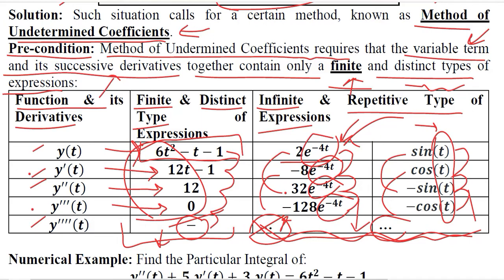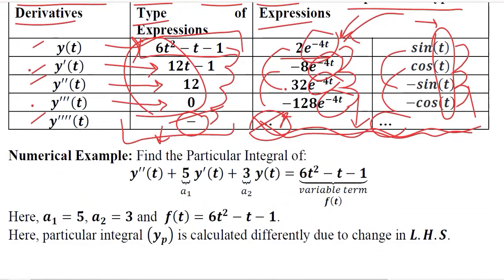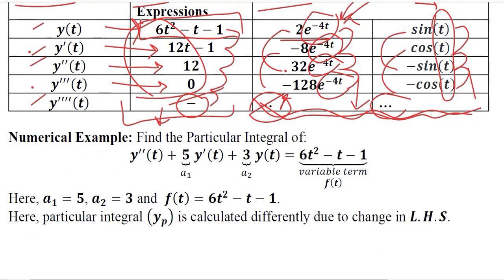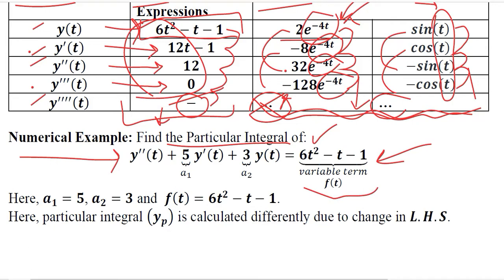So we have to choose a variable term that produces a finite and distinct type of expression. In this numerical example, we are using such a function as the variable term because it is solvable; otherwise this method will not help us. We are required to find the particular integral, since the complementary function can be found without being affected by the variable term on the right-hand side — it depends on a1 and a2. Here a1 and a2 are 5 and 3, and this term on the right-hand side is what we call the particular integral.